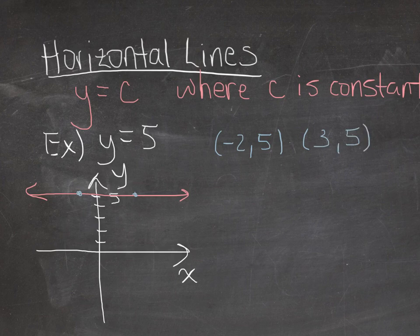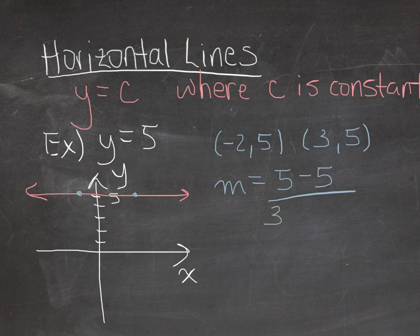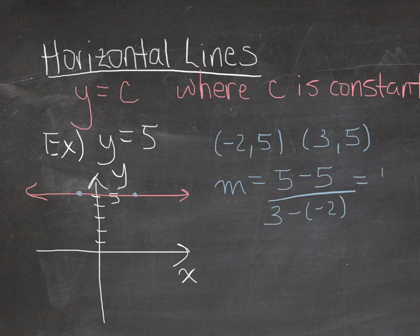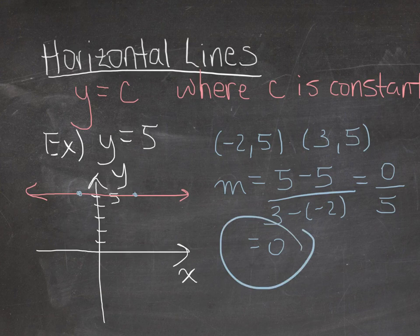So I'm going to plug that into my slope formula. So slope is equal to y2 minus y1 over x2 minus x1. So there I can see that I'll get 0 over 3 minus negative 2 is 5, but I have 0 divided by a number, so my slope is just 0. And actually, the slope of any horizontal line will be 0.